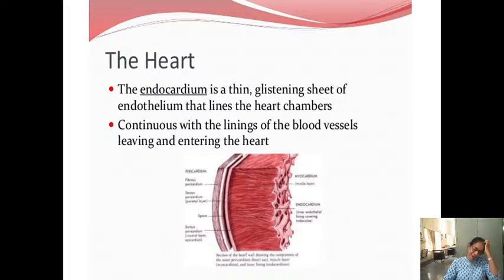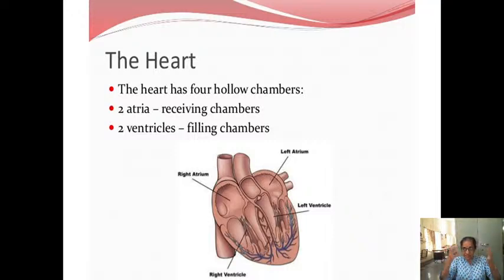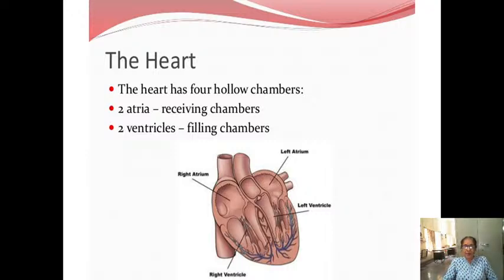The epicardium is again all covered by the fibrous pericardium. The heart has four hollow chambers — two atria and two ventricles. The function of the atria is to receive blood — they are the receiving chambers. They have the capacity to receive blood and can also contract.